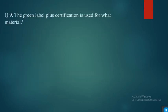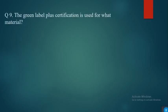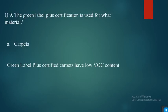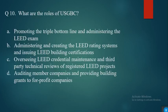Question nine: the Green Label Plus certification is for what material? The options are: food, cleaning products, flooring carpets. The answer is carpets, because Green Label Plus certified carpets have low volatile organic compound content.